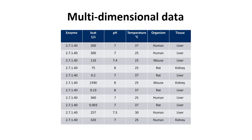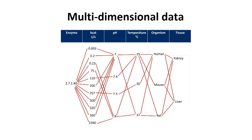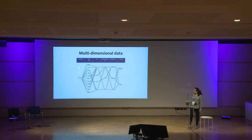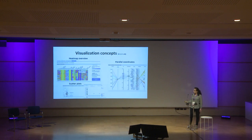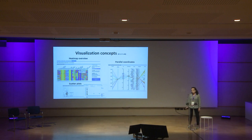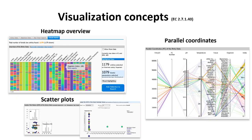That's why we developed some visualization concepts. One is called parallel coordinates, which brings this data together by sorting it, and each of these lines represents one entry in our database. I will now show you how this looks in our database — we have three different visualization concepts.